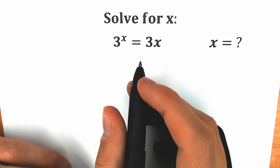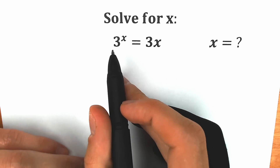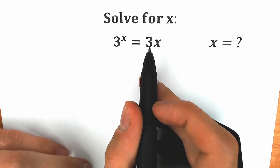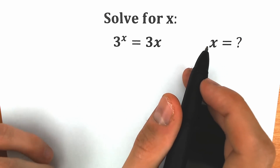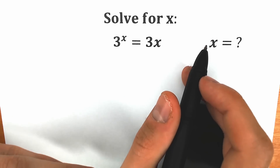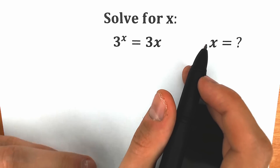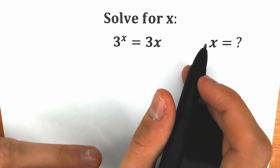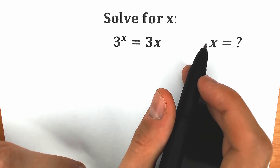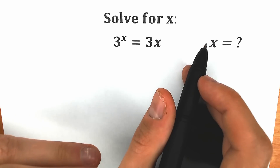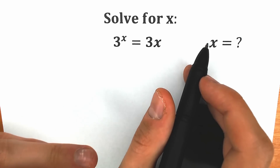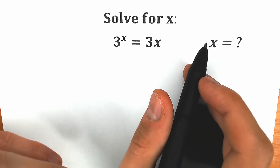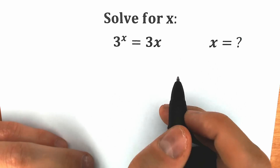Hello everyone, welcome back to my channel Higher Mathematics. Today we have a really interesting exponential equation: 3 to the x equals 3x, and we need to find x. A lot of students might say we can easily solve it in a few seconds — maybe x equals 1 — but then I ask them: what about other solutions? Maybe we will have more real number solutions, and it's a really tricky moment. Let's try to solve this question completely and step by step.